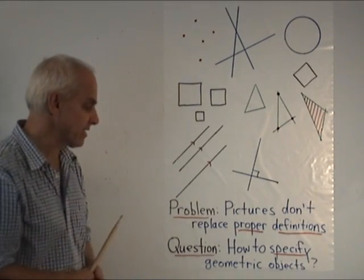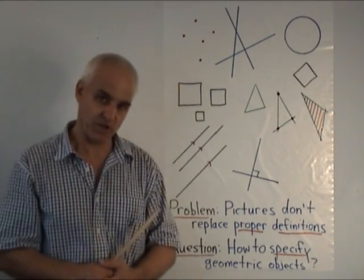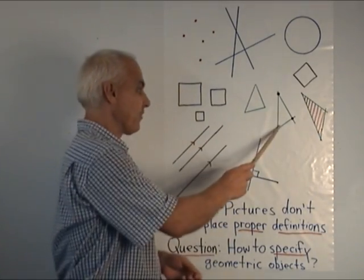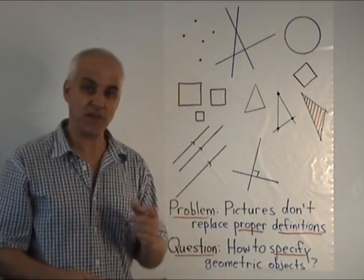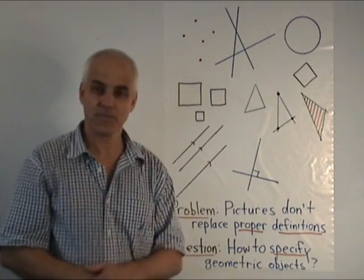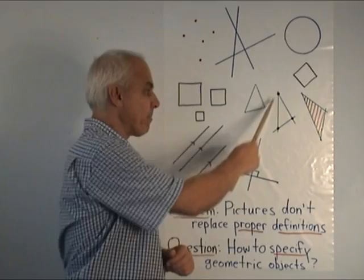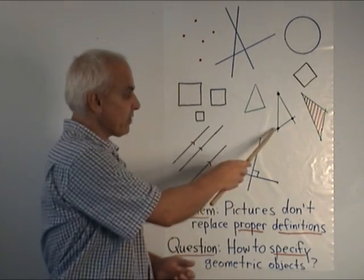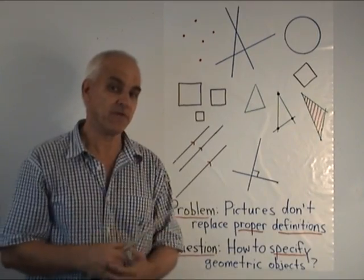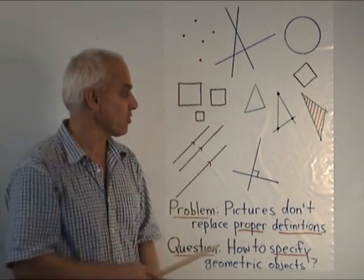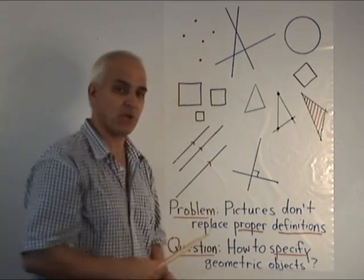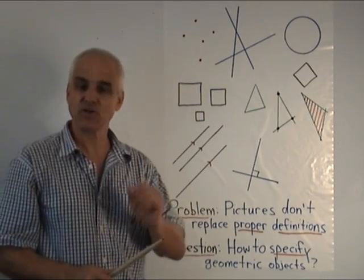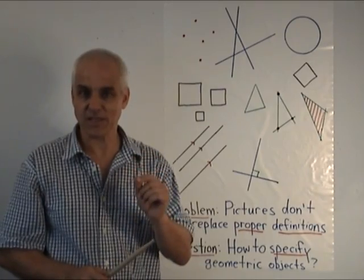And another question related is how does one specify geometric objects? For example, let's say I take this triangle here and I want to pass on the information about this triangle to you. If I can't show you a picture, suppose I have to write you a letter or an email, and I want to express this triangle, then how do I do it efficiently? In other words, what kind of information is required to specify a geometrical object? That's going to be an important question because it's very directly connected with the idea of a definition.